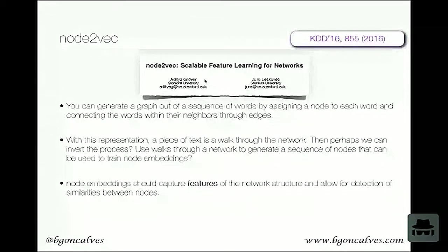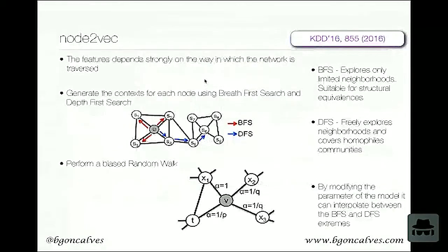Node2Vec is also a very good application of this idea. The idea is very simple. You can think of the sequence of words as being a path on the graph of words, where you connect words based on whether they're next to each other or not. And if you can think of a text as being a network, can you think of a network as being a text? And instead of learning embeddings for words, you're learning embeddings for the nodes and embeddings that somehow capture some feature of the network structure. And you can use to measure similarity between nodes. So they do this in a couple of different ways. The features, of course, the way you're walking through the network will depend on how you're walking through the network. So they tried first breadth-first search. And depth-first search. They found that breadth-first search explores only very limited neighborhoods, which gives you some type of structural equivalence. Depth-first search explores neighborhoods and covers homophilic communities. And then they developed their own biased random walk, where at each step, the walker basically decides to go back to where it just came from, or to keep moving forward in specific ways. And in this way, they were able to interpolate between the two extremes.